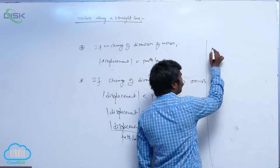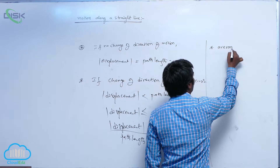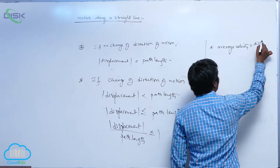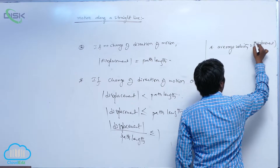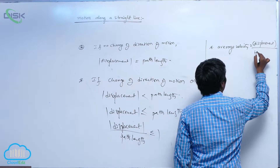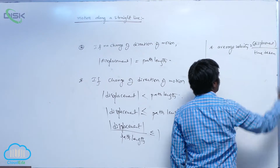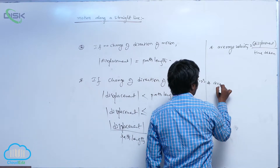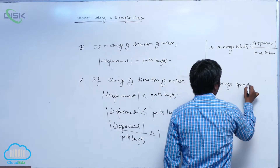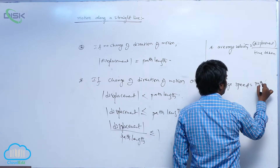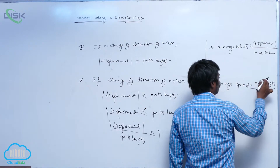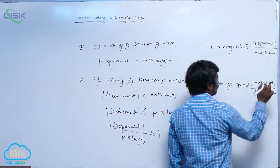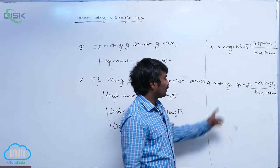Next, let me introduce two more terms. Average velocity is equal to displacement divided by the time taken for that displacement. And average speed is equal to the length of the path followed — that is, path length — divided by the time taken for that path length.